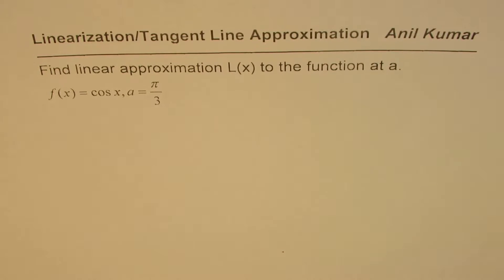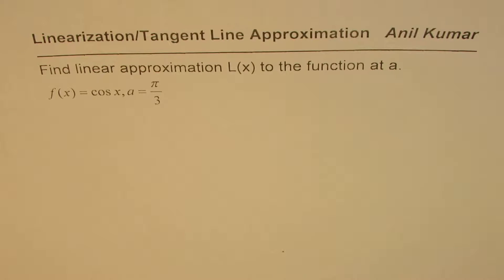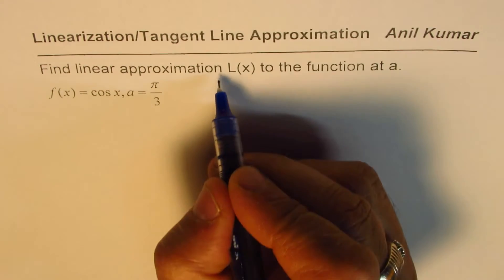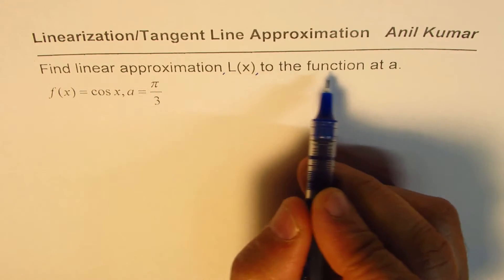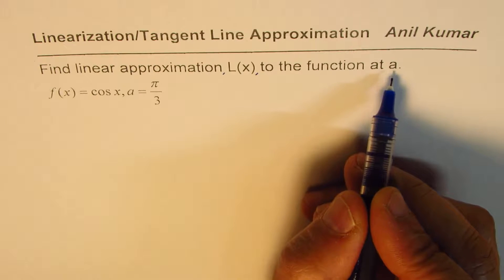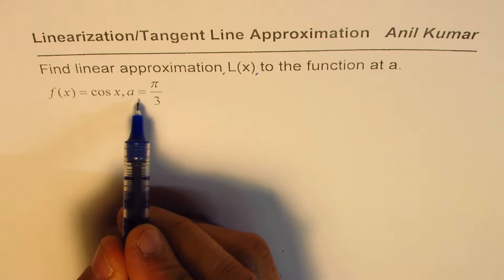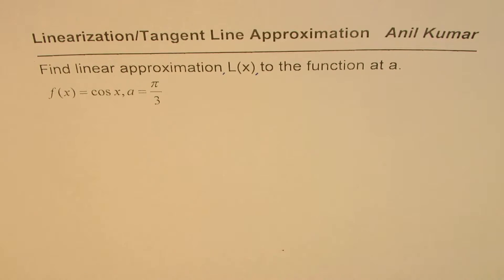I'm Anil Kumar. Here is a review question: find the linear approximation for a given function at a given point. We are taking the trigonometric function cosine x in this example. The question is: find the linear approximation L(x) to the function f(x) = cos(x) at a = π/3. In linear approximation, we are actually finding the equation of a tangent line — that's the very basic concept.